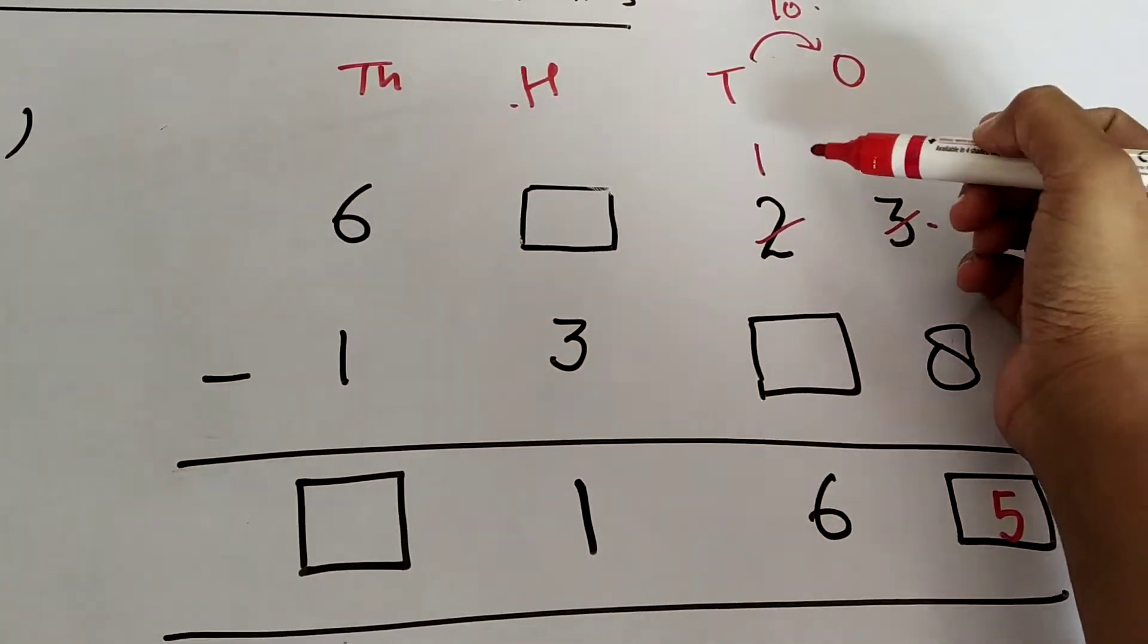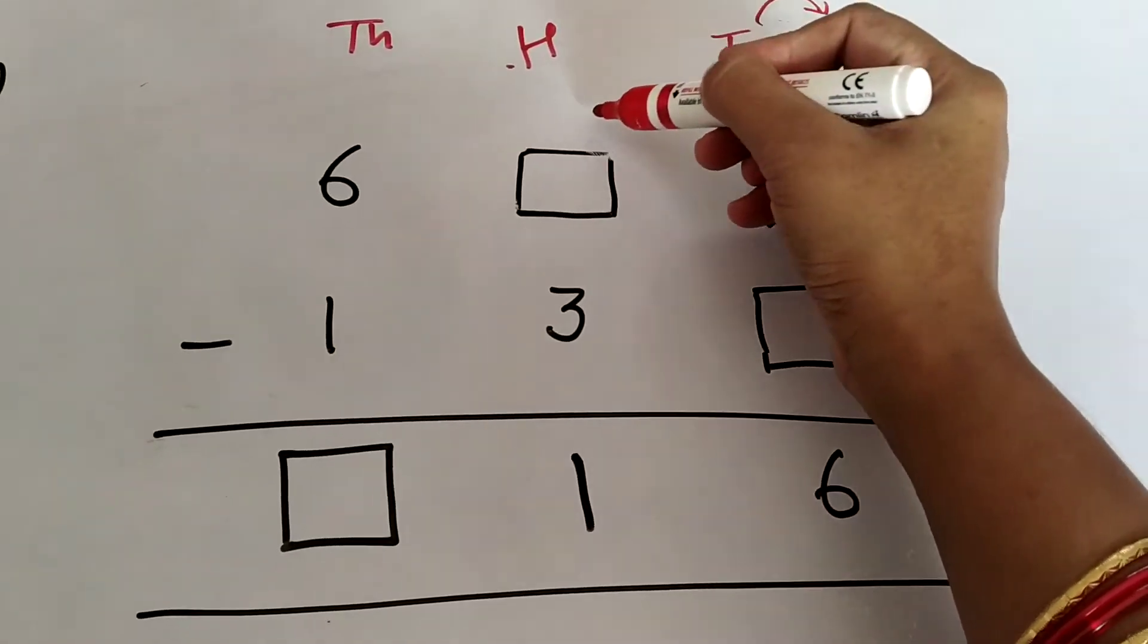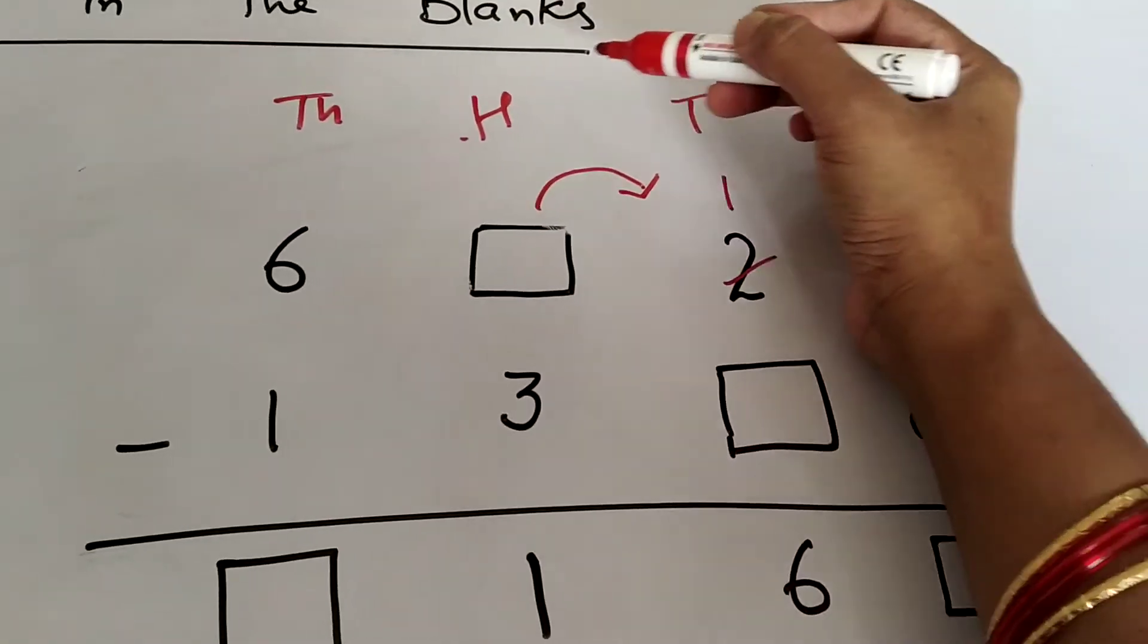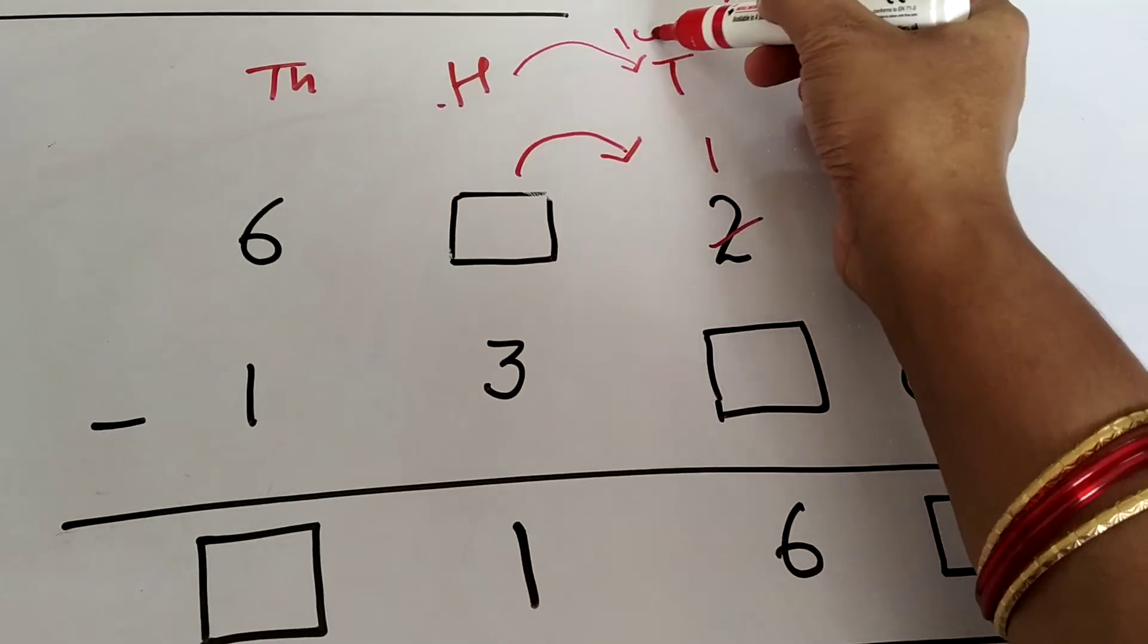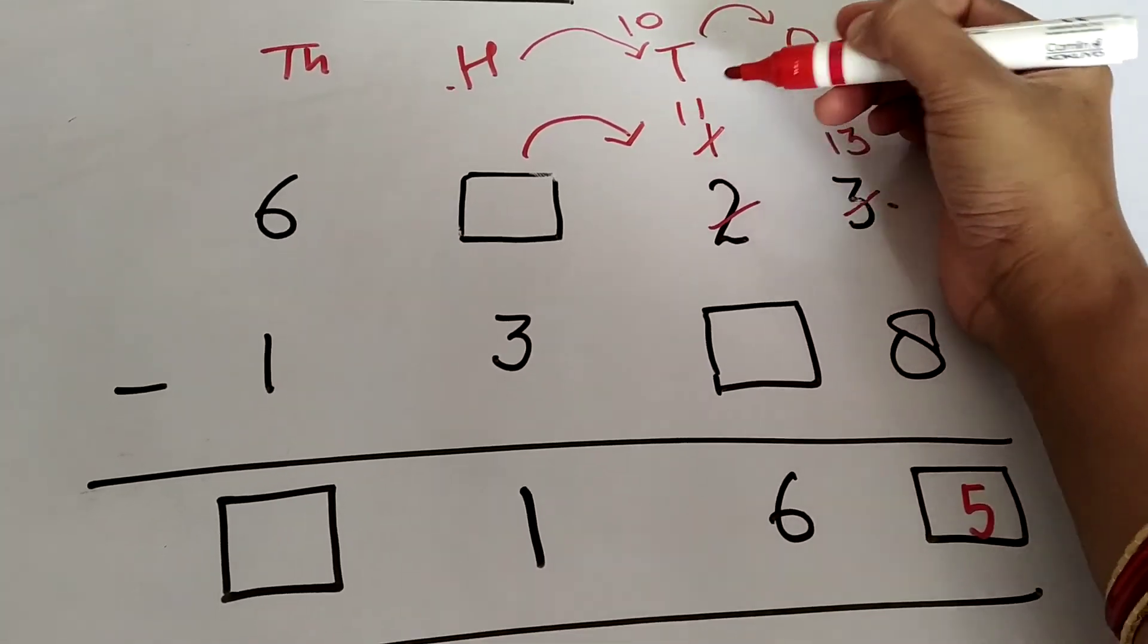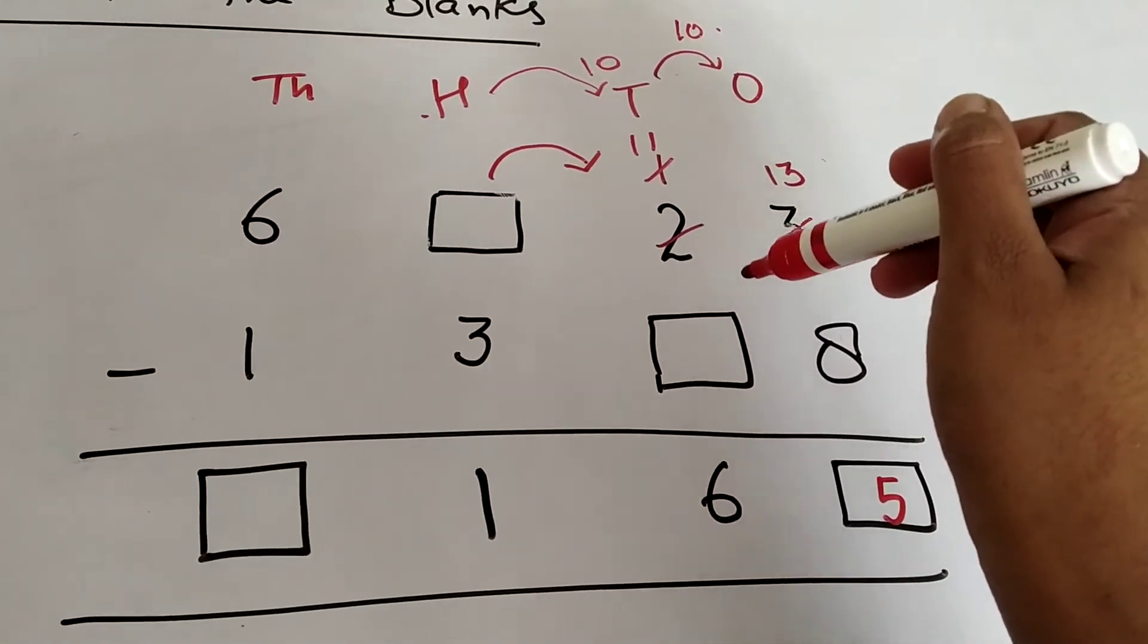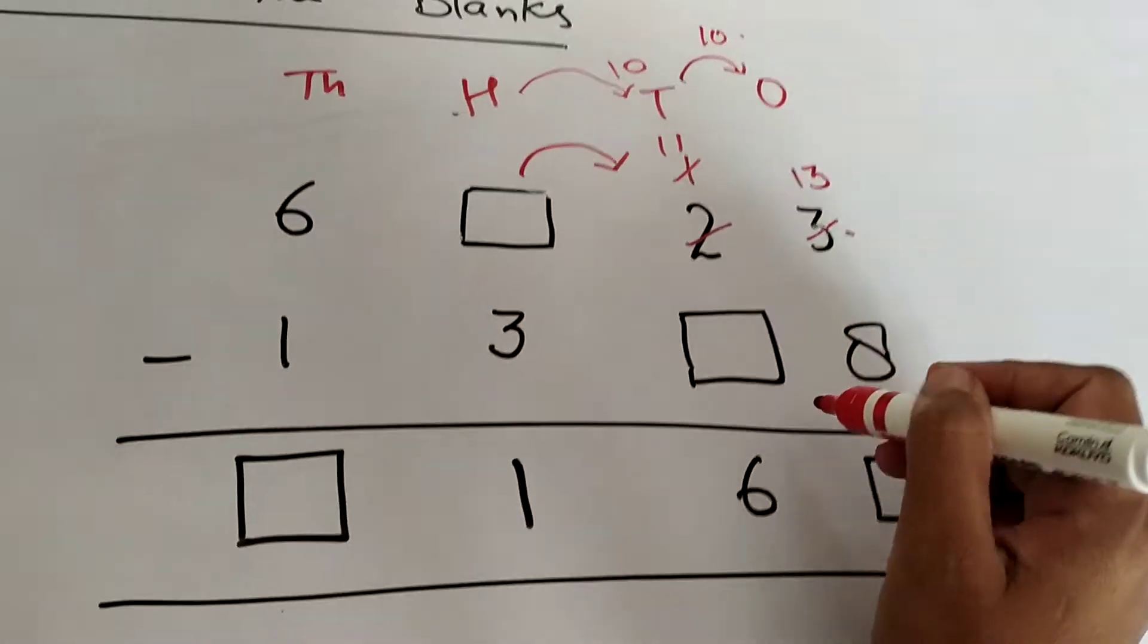So we thought this might have borrowed 1 number from here. 1 hundreds will give 1 hundreds and it will become 10 tens here. So this 1 might have become 11. Now we have to think of a number that should be subtracted from 11 to make it 6, so we try it here.